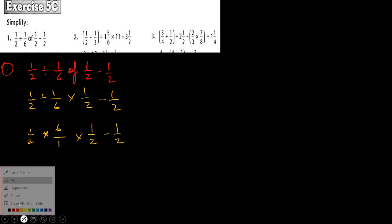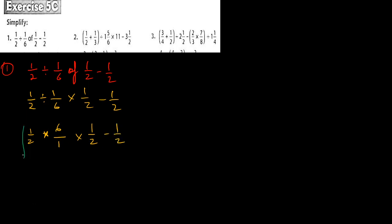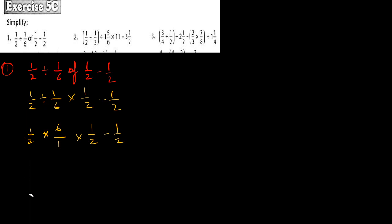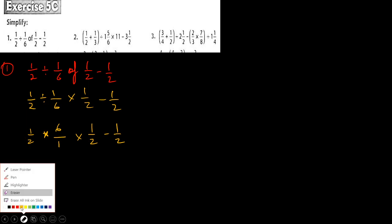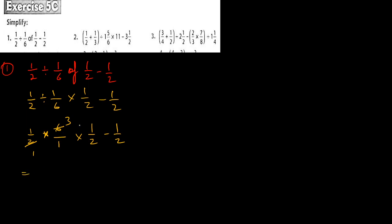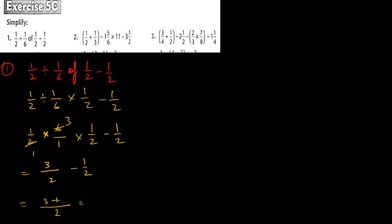Now we multiply these three fractions. Two ones are two, two threes are six, so three ones are three in the numerator and two ones are two in the denominator, minus 1 upon 2. Now take LCM of 2 and 3: three minus one is two, so 2 upon 2 equals 1. So 1 is your answer.